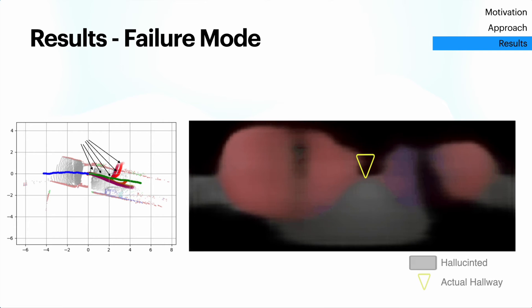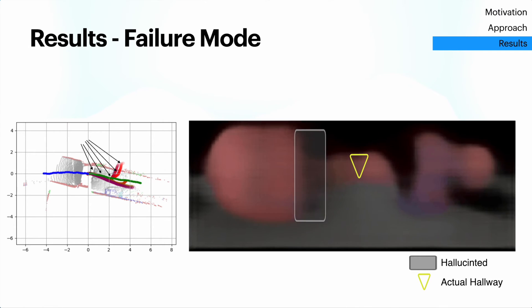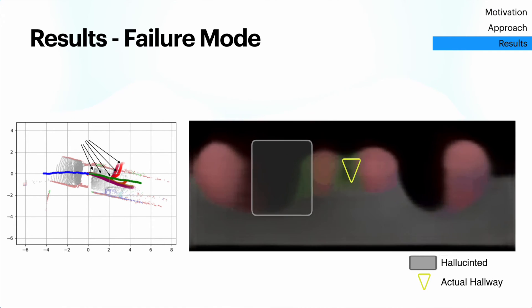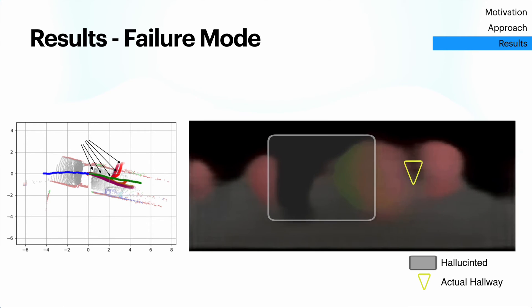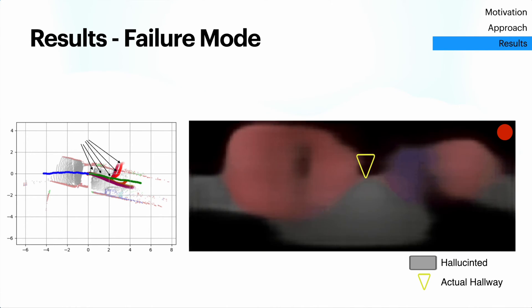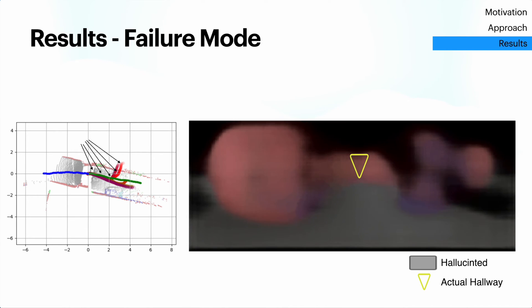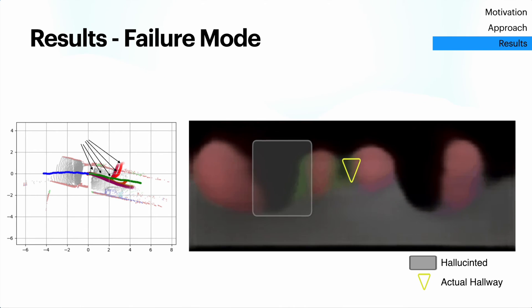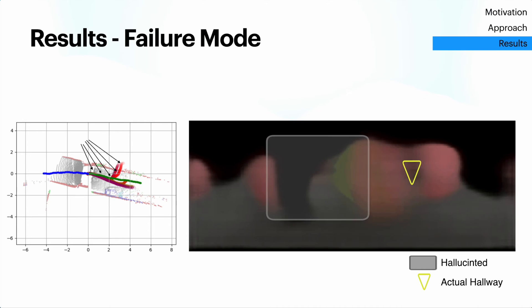An interesting use of future visual prediction is to understand the typical failure mode of the model, which is hallucination. In this scenario, an unexpected left turn is predicted. From the model's perspective, it hallucinated a hallway in the unseen part of the visual memory and turned into it.